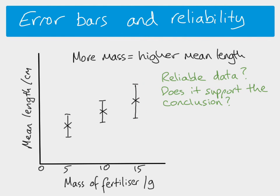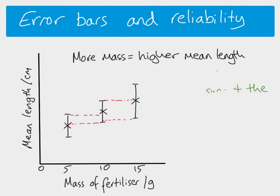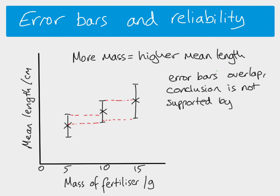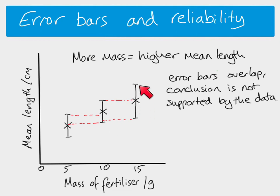Looking for overlap in the line graph: there is overlap between the mean at 5 grams and 10 grams, overlap between 10 and 15 grams, and also overlap between 5 and 15 grams. Because the error bars overlap, the conclusion that increasing fertilizer mass increases mean length is not supported by the data. We can also compare reliability between data points: the error bars for 15 grams have a bigger range compared to 5 grams, so that data point is less reliable. In fact 15 grams is the least reliable data point because the error bars are furthest apart.